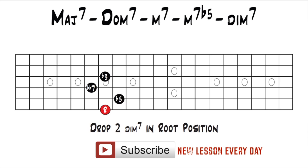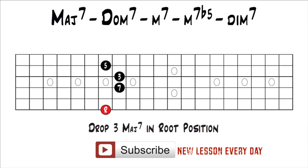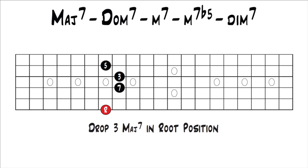That was drop 2 chords. We could also look at drop 3 chords. This is a drop 3 major 7th in root position starting on the 6th string. To get to all the other 7th chords by moving one note at a time, it's the exact same process. To get from a major 7th to a dominant 7th, you move the 7 down half a step to the minor 7th. That's your drop 3 dominant 7th in root position.